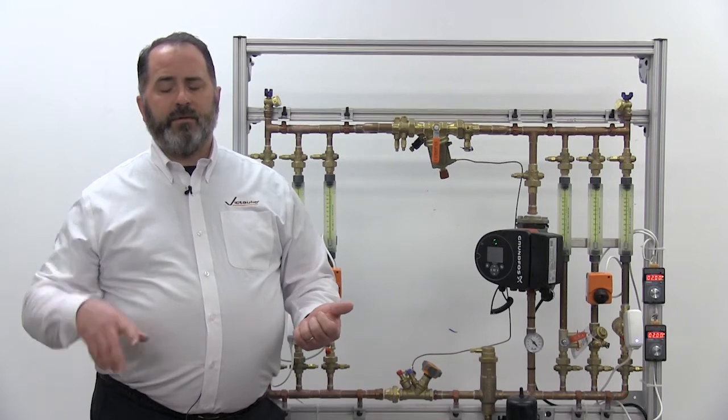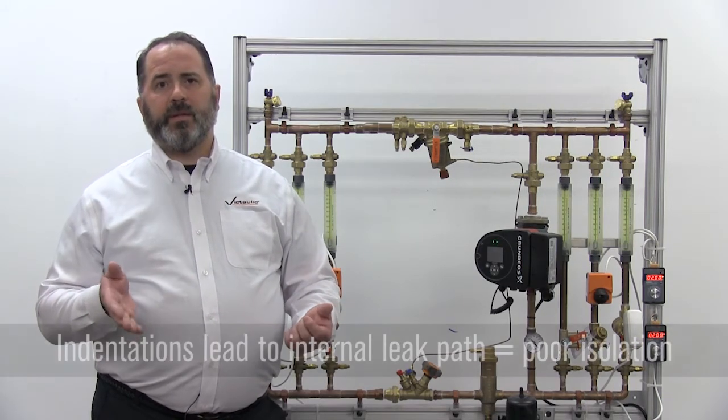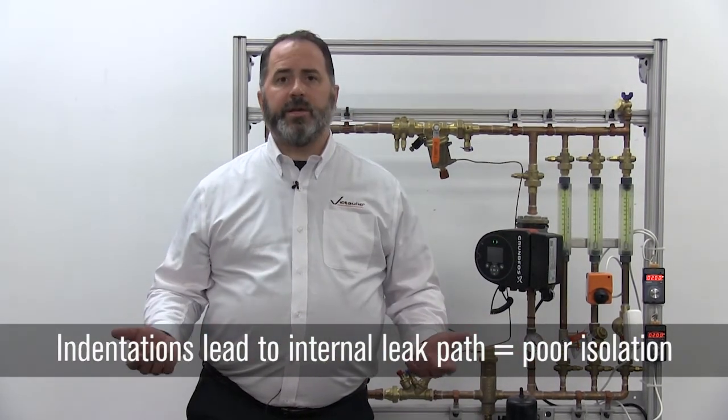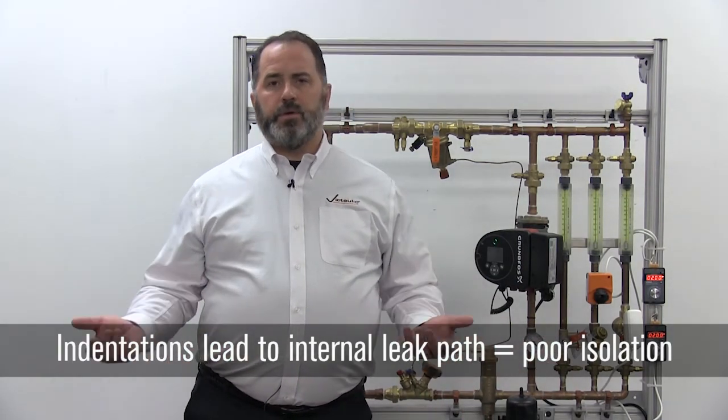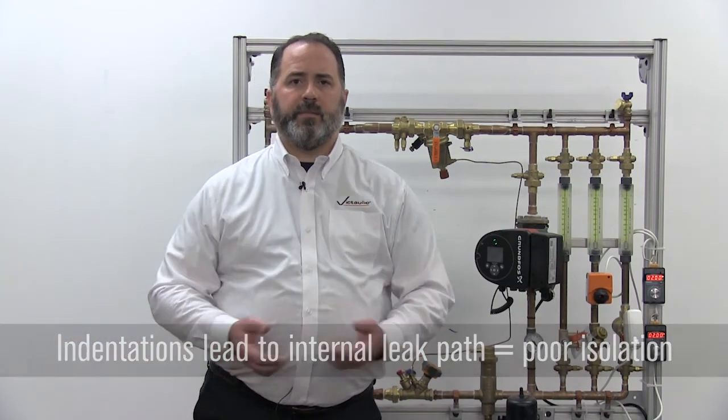When you go to close that valve, you bring it to its closed position and that indentation will cause a leak with a leak path within the valve. And that valve really isn't the best thing for using for isolation at that point. So normally if you see ball type balancing valves, they'll usually incorporate a secondary ball valve to isolate the system if you need to.